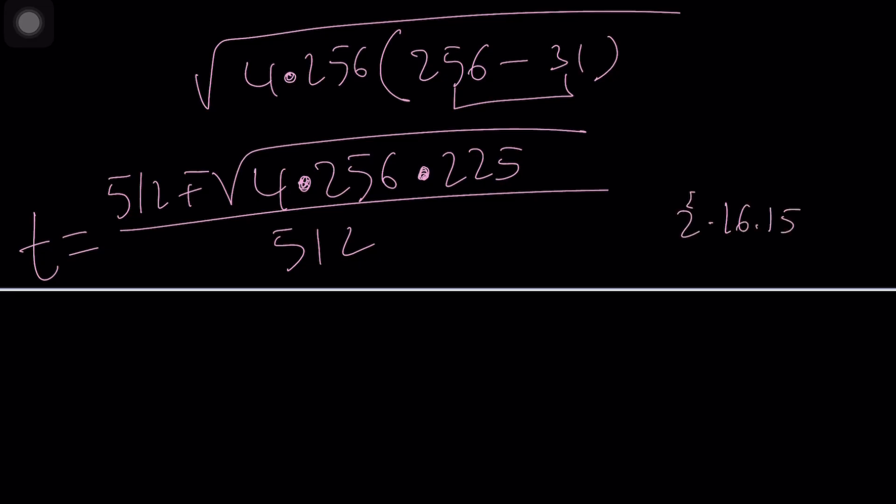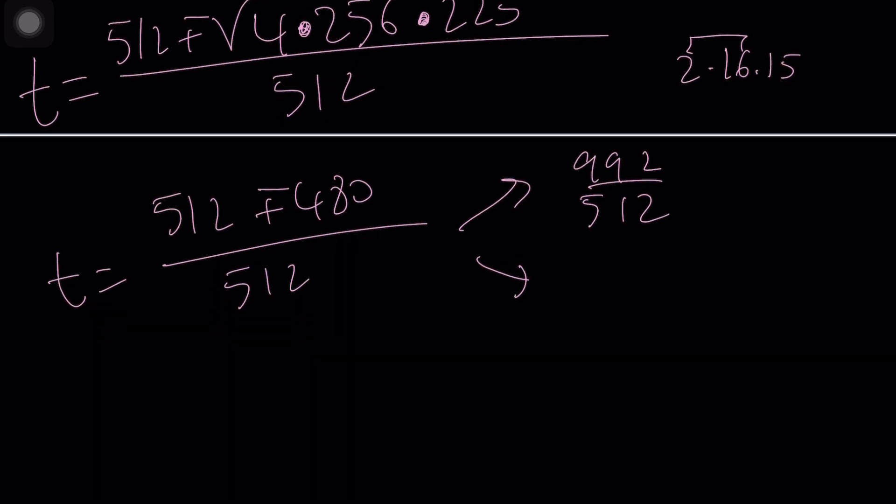So this is 512 plus minus 480 divided by 512. Let's split it up into two solutions. If you add 512 and 480 that's going to give you 992 divided by 512, and their difference is 32 over 512.